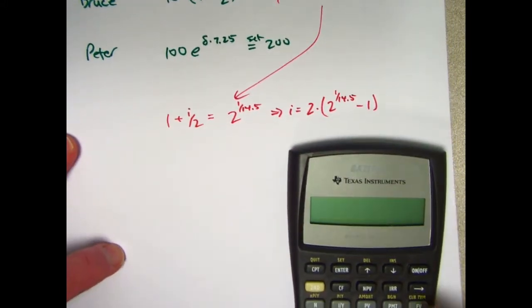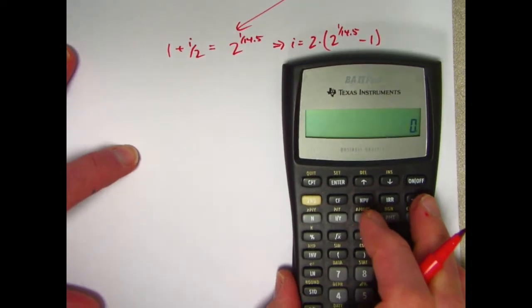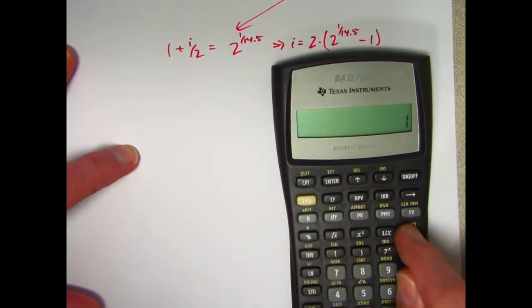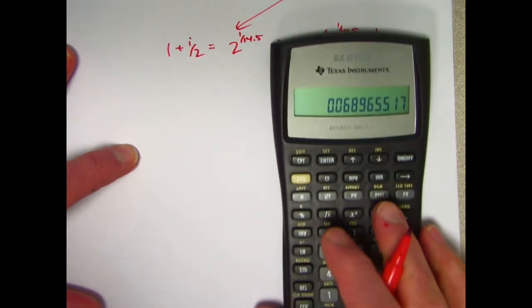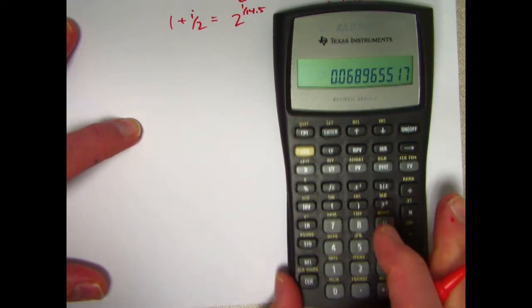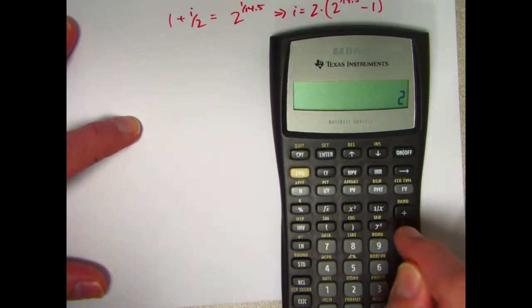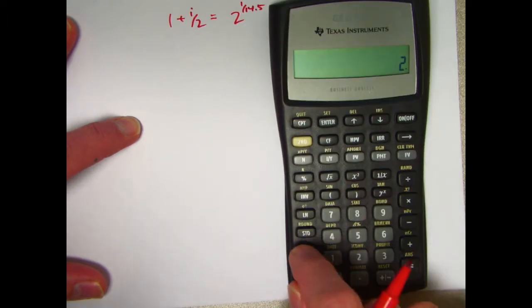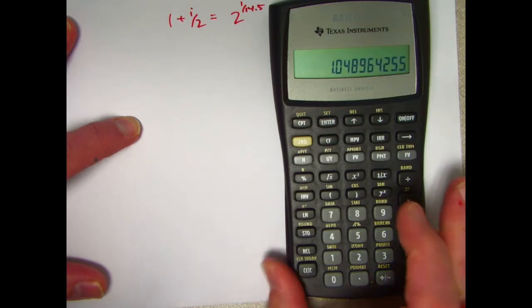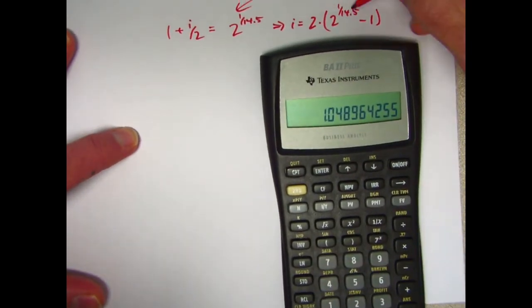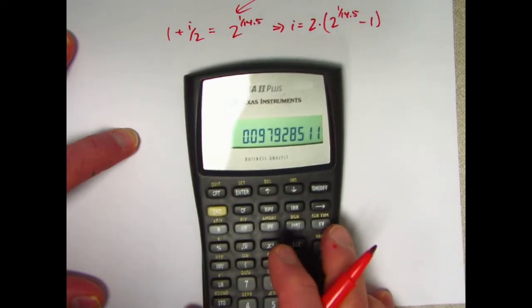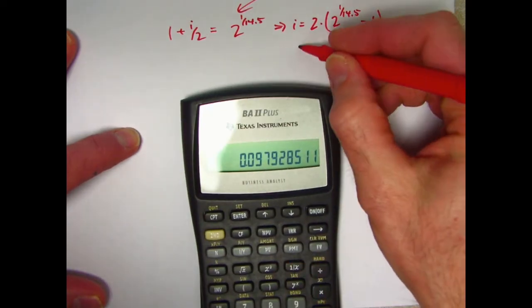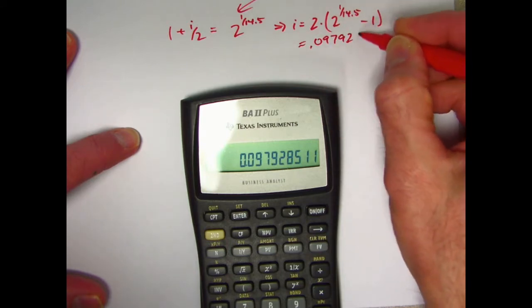Let's use the calculator now. What is 1 over 14.5? It is that number right there. Let's store that in register zero. I want to take 2 to that power. 2 raised to that power, which I'm now going to recall from register zero. So this number is representing that thing right there. Subtract 1, multiply by 2. And we get that i is about 0.0979285.